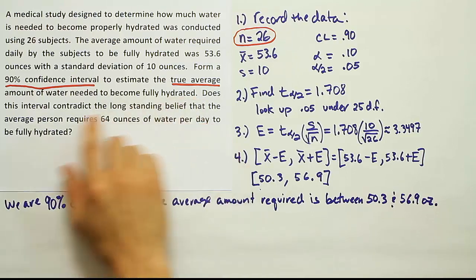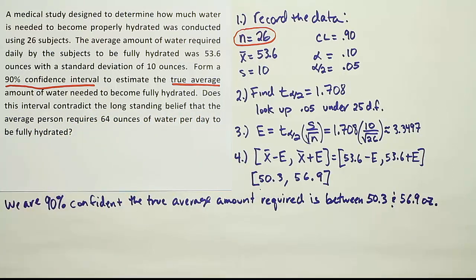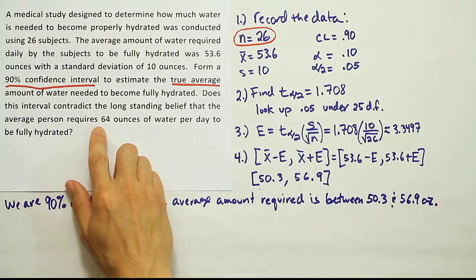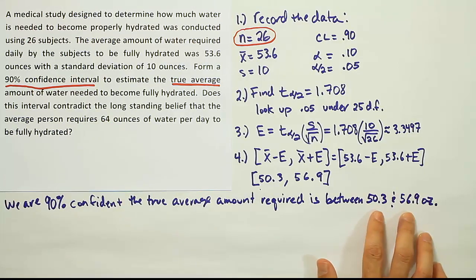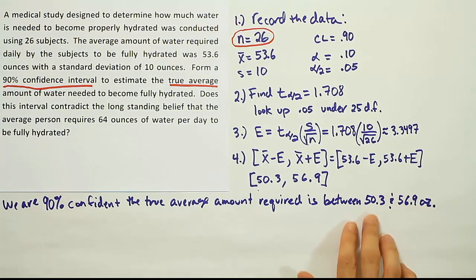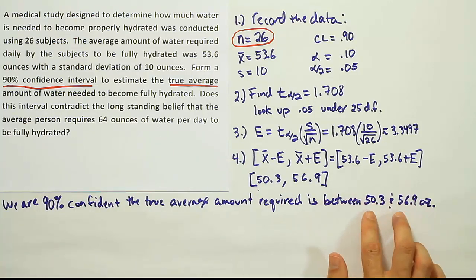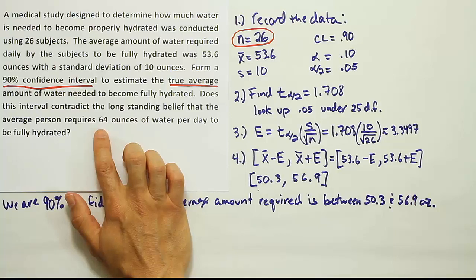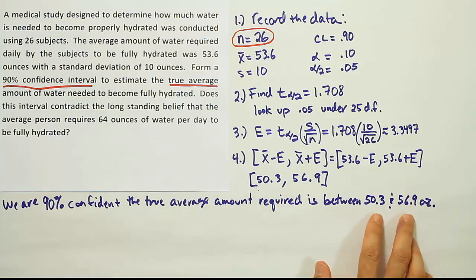Then we should answer this last question they asked us. Does the interval contradict the long-standing belief that the average person requires 64 ounces of water per day to be fully hydrated? Well, if it requires 64 ounces to be properly hydrated, then it should be within our interval, because our interval is supposed to capture the population mean. We're 90% confident that the real population mean is between 50.3 and 56.9. This number 64 is outside of that value, it's too high. So we think that, in fact, our interval does contradict this long-held belief. Basically, we are kind of refuting that with this data. This data makes it look like it's less water that's required to be properly hydrated.